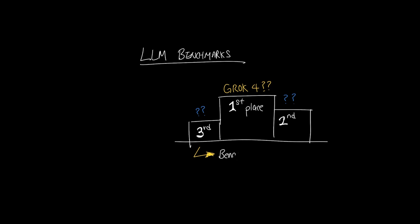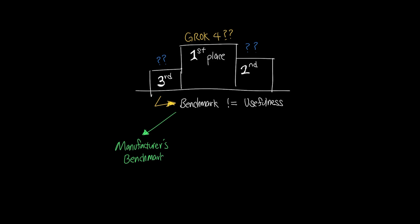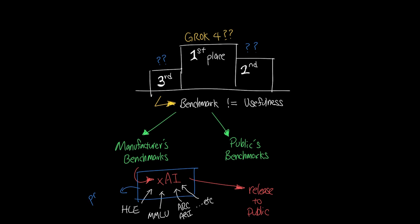Now benchmarks in and of itself don't actually reflect the usefulness of the model, so it's good to split them into two segments: manufacturer's benchmarks and public benchmarks. Manufacturer's benchmarks are typically released by the manufacturer, in this case XAI, and these benchmarks are typically run in private.